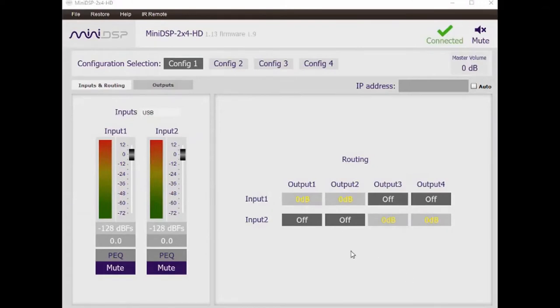The routing table allows any of the two inputs to be routed to any or all of the four analog outputs.